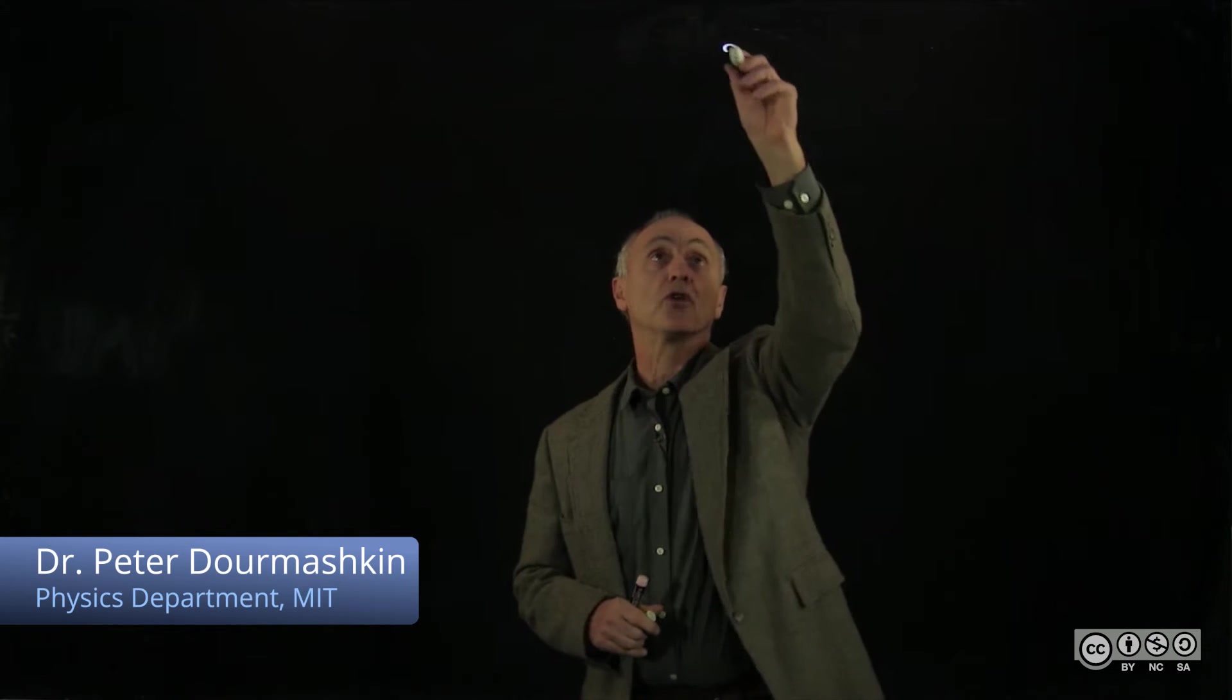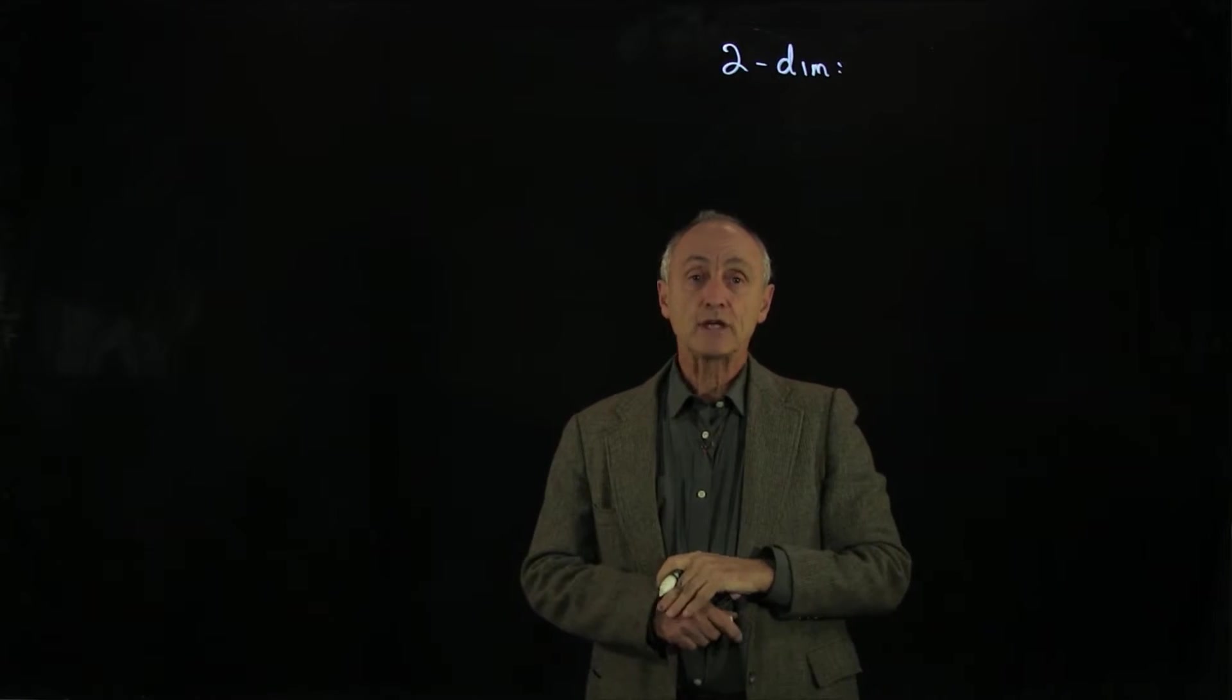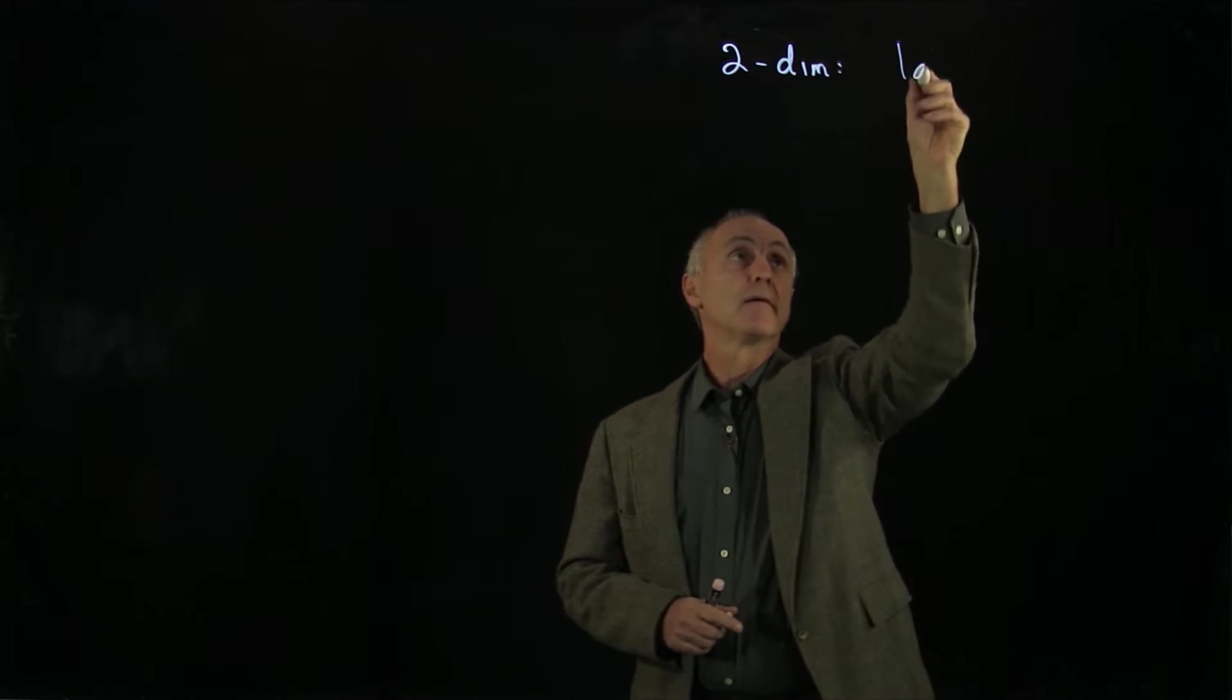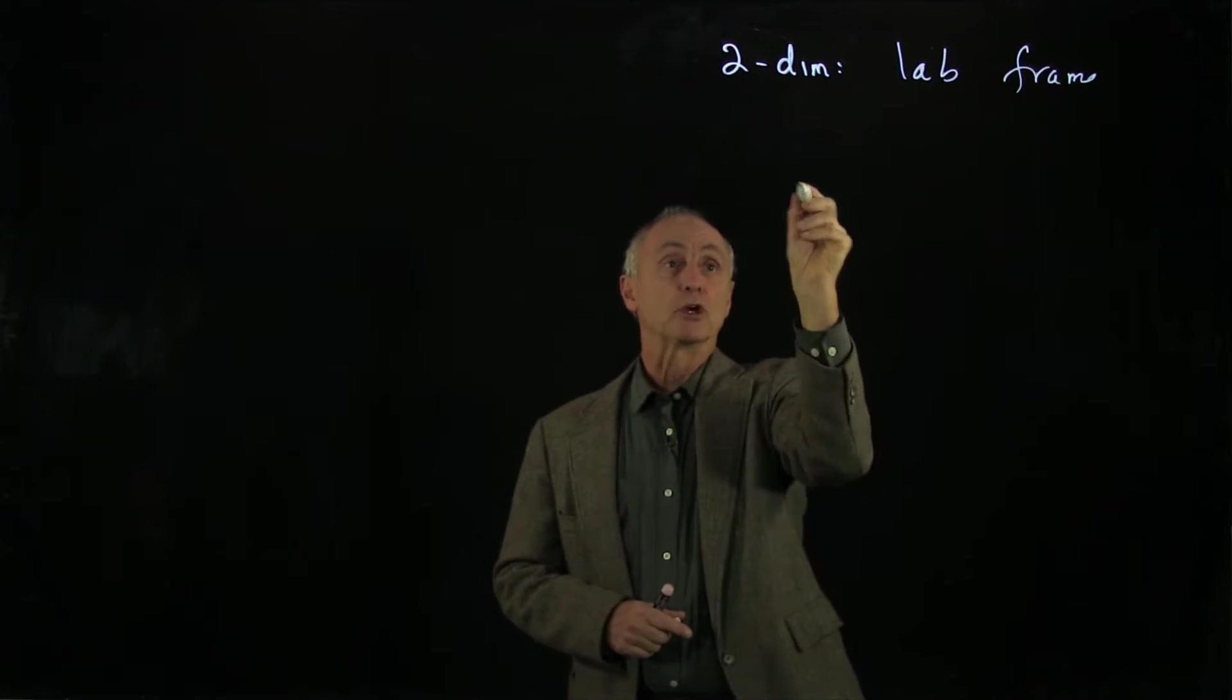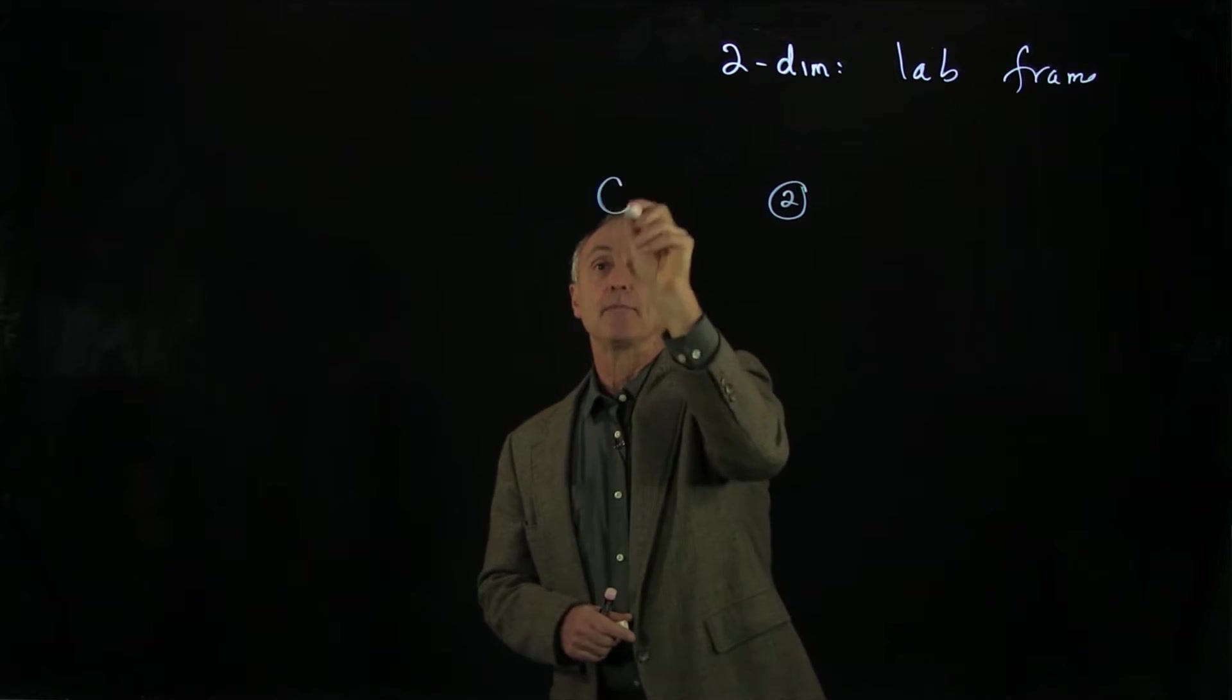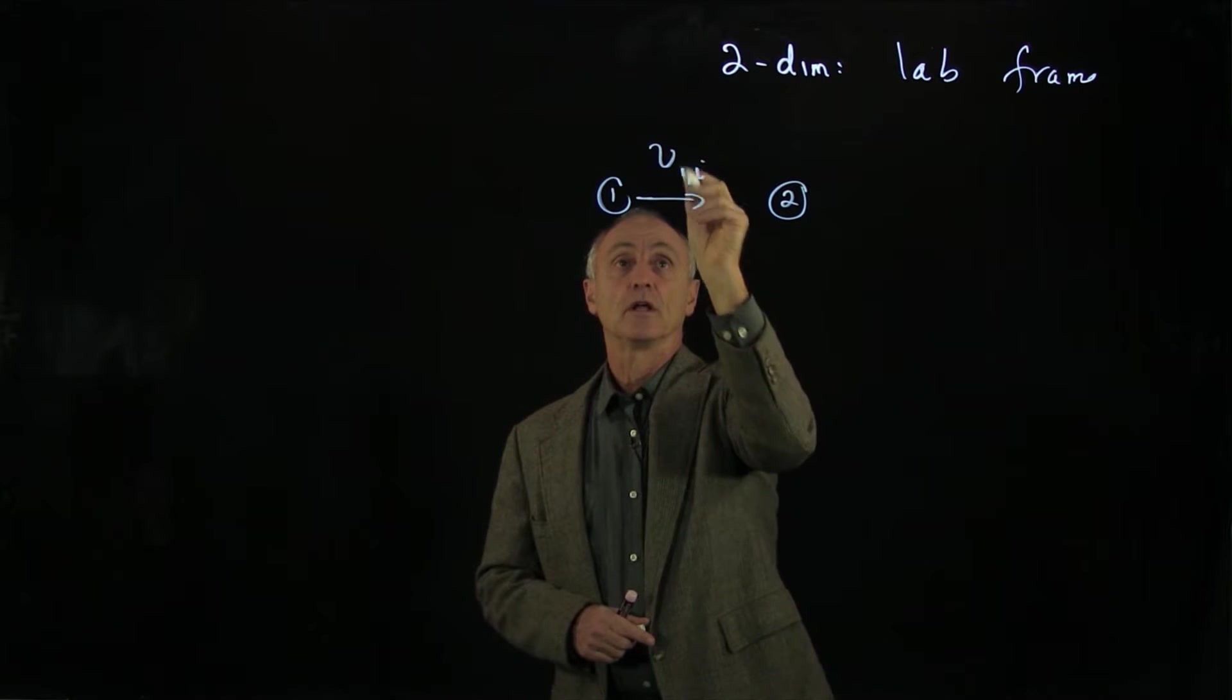We would now like to look at two-dimensional collisions. And what we'd like to look at is in the laboratory frame, so I'll call that the lab frame, in which we have a target particle, which I'm going to call two, and an incoming particle one, which is coming in with some initial velocity.